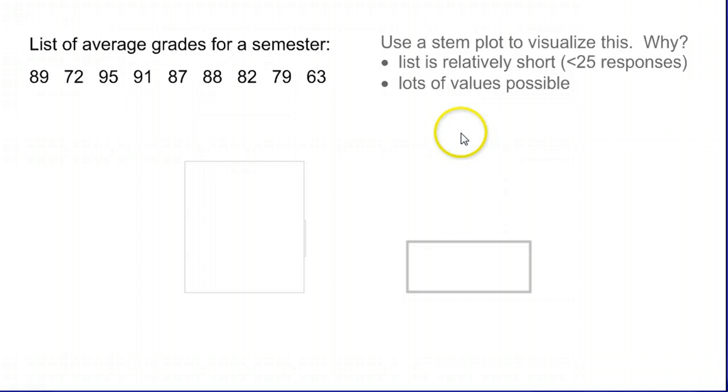Here it looks like we have values ranging from as low as 63 to as high as 95, pretty decent sized range. So small list, decent sized range - that's a great place to create a stem plot. Stem plots, sometimes called stem and leaf plots, break numbers into two parts.